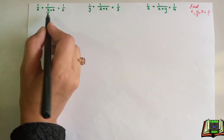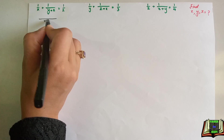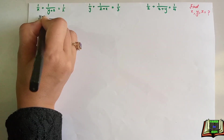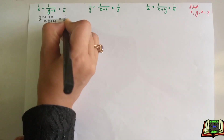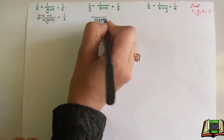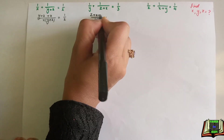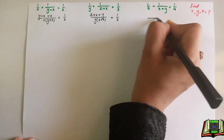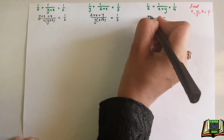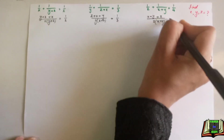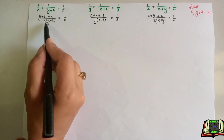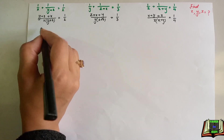First of all we are going to take LCM in these three equations. For equation 1: x(y+z) in denominator and (y+z+x) in numerator equals 1 by 2. For equation 2: y(z+x) in denominator and (z+x+y) in numerator equals 1 by 3. For equation 3: z(x+y) in denominator and (x+y+z) in numerator equals 1 by 4.